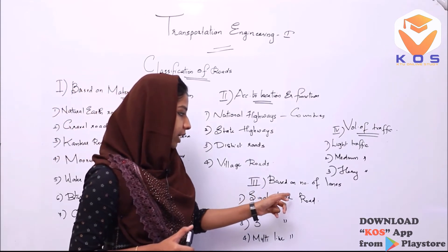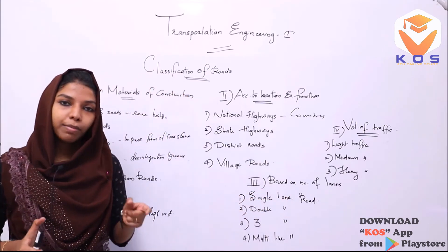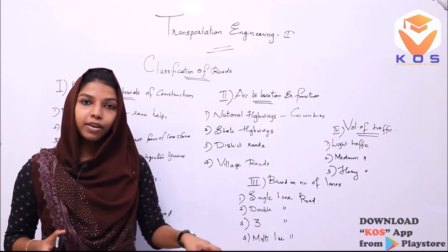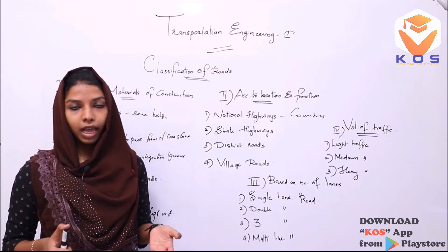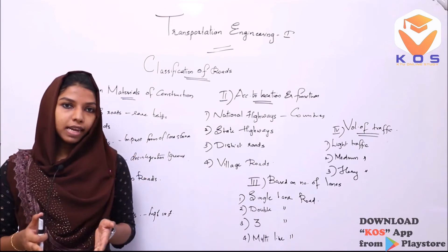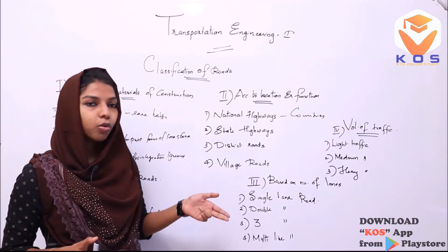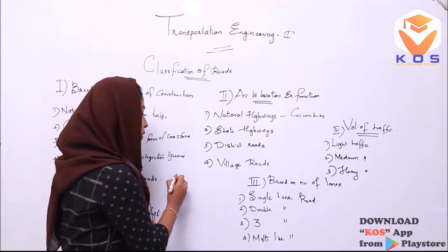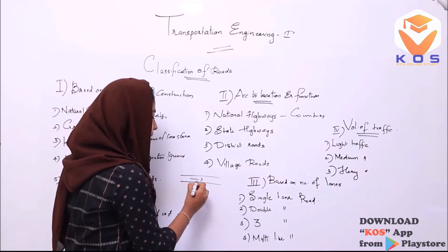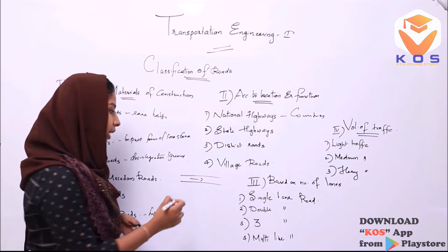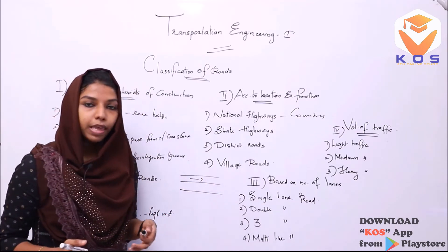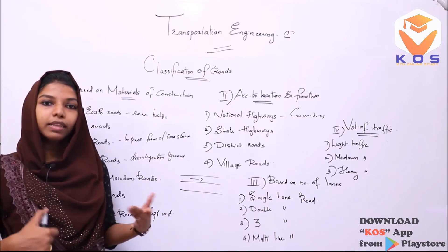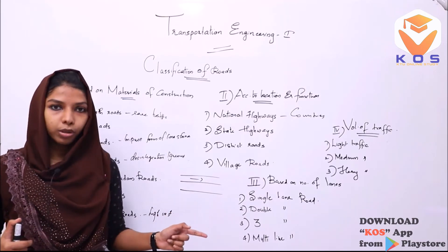The third main classification is based on the number of lanes. We classify roads by number of lanes: single lane road has one path, then there are two-lane roads, three-lane roads, and multi-lane roads — more than three lanes is classified as multi-lane road.